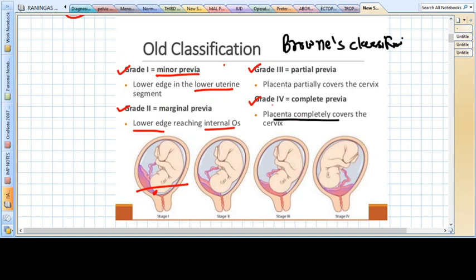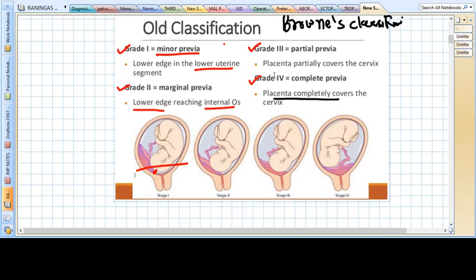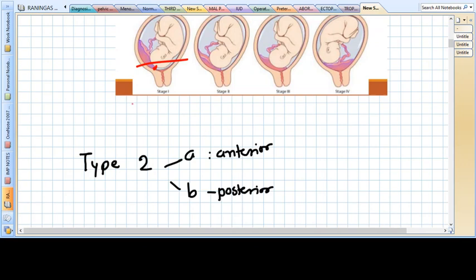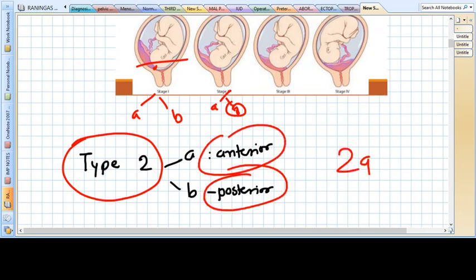In the old classification, grades one and two can be anterior or posterior. They are also called type A and B. So type two can be divided into anterior and posterior, type 2A and type 2B.